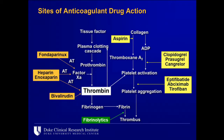It's important to understand where these agents act in the coagulation cascade because that ultimately determines their efficacy and safety in the cath lab. The importance of antithrombin therapy relative to antiplatelet therapy is really based on the inhibition of thrombin, which is a very potent potentiator of platelet function. So these two things work hand-in-hand — anticoagulation and antiplatelet therapy.